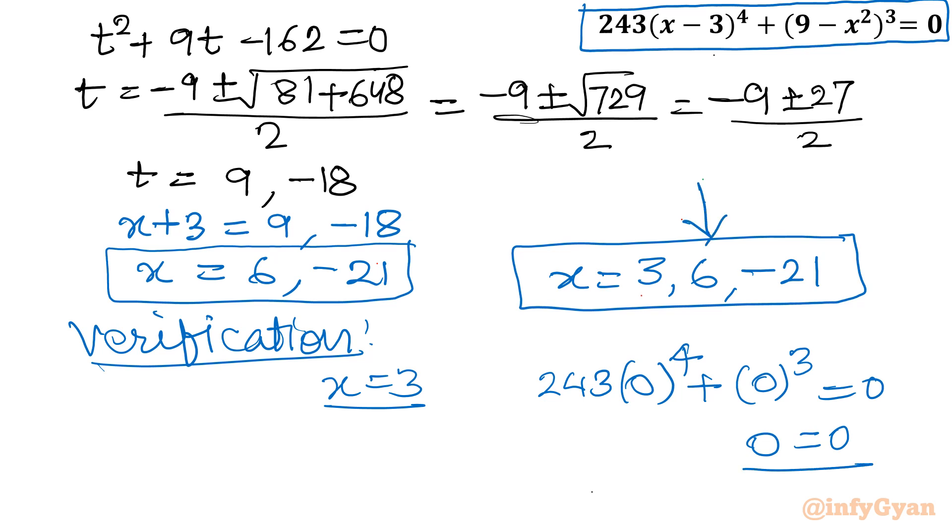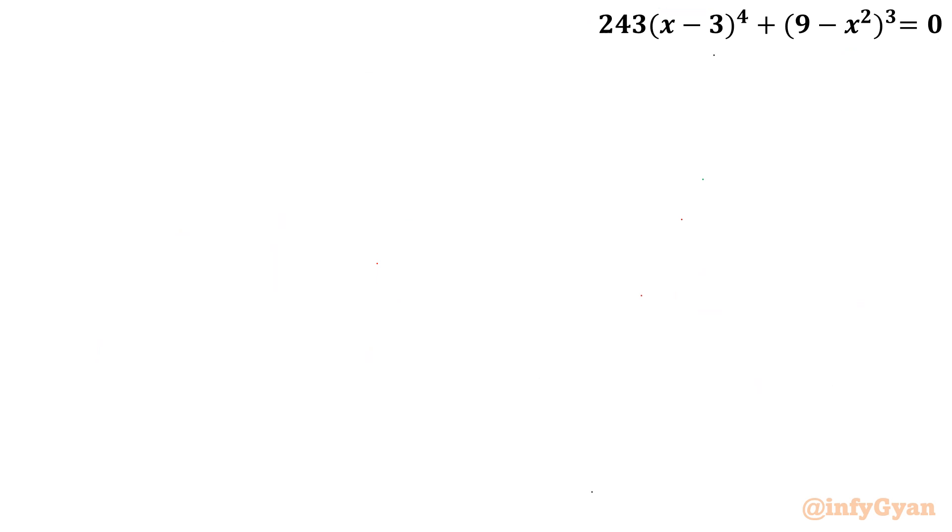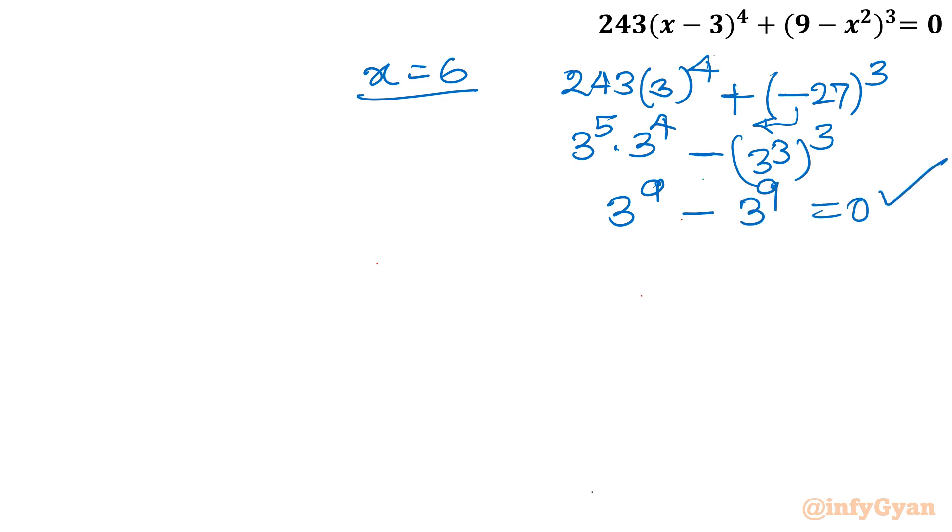Now come to 6, the second value. Let me consider x is equal to 6. So I will write 243(6-3) so 3⁴ plus 6 squared gives us minus 27, 9 minus 36 so minus 27 cube. In next step I will write it is 3⁵ times 3⁴ minus, this minus I will take outside, so minus 27 cube. 27 is 3³ whole cube. I will apply exponent properties. 5 plus 4 is 9 minus 3⁹. So 0. True. This is also verified.